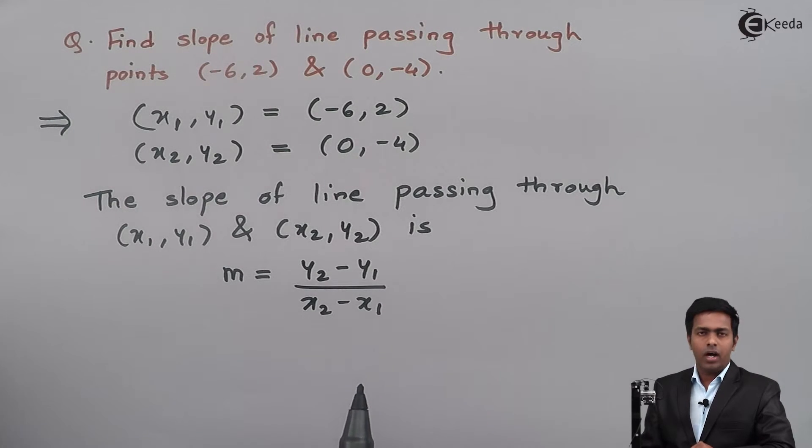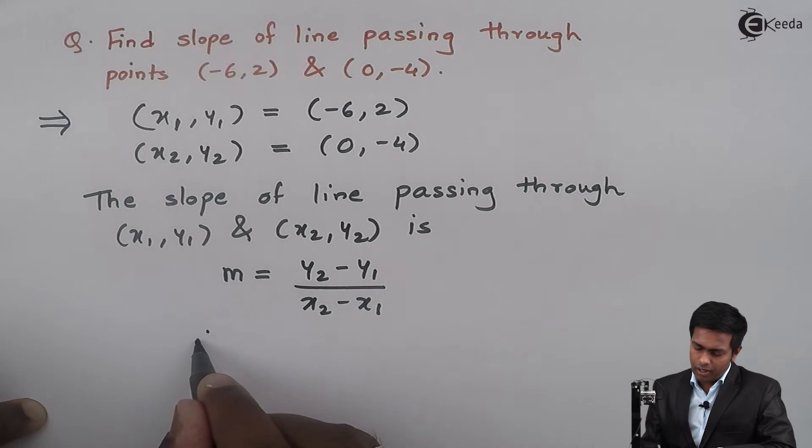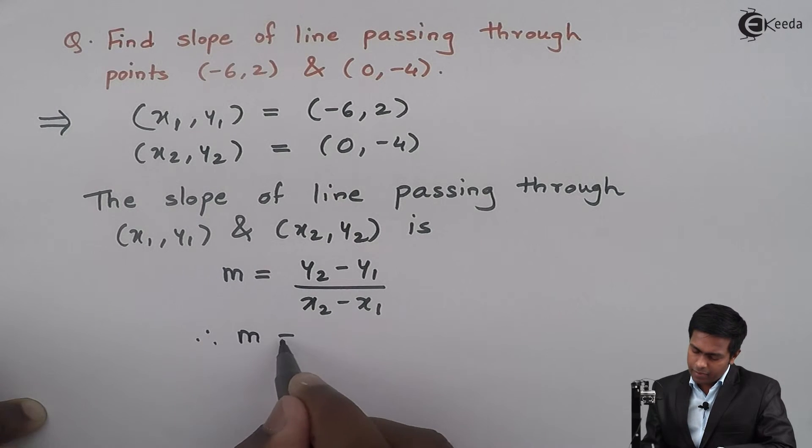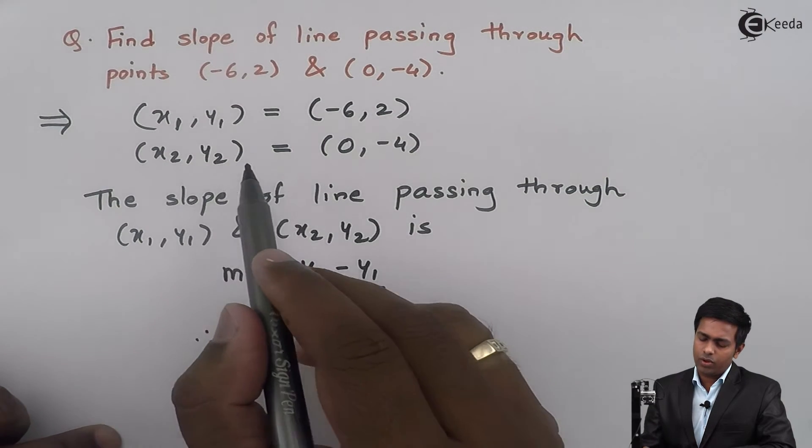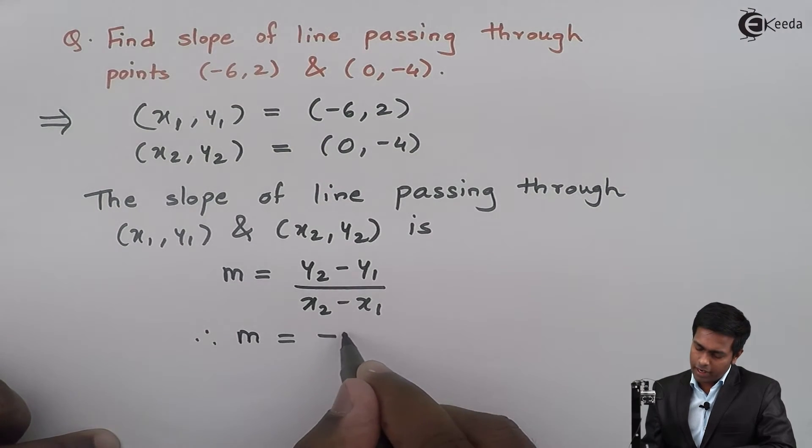So now I will just substitute the values of y₁, y₂ and x₁, x₂ in this formula. So m will become y₂, here y₂ is -4, so -4...